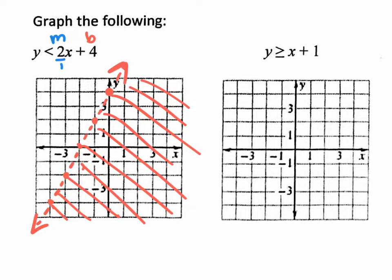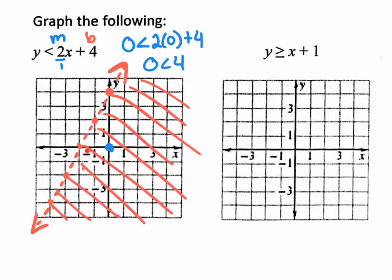What I originally said was to test (0, 0). If you plug in 0 for Y and 0 for X, it says 0 is less than 2 times 0 plus 4, which gives you 0 is less than 4 — that's true. So the shortcut is: if Y is less than, shade the bottom; if it were greater than, you'd shade above.